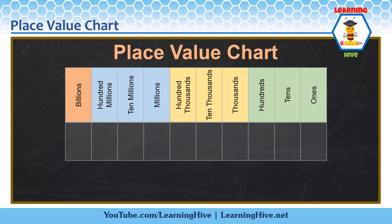Here's a place value chart for up to 1 billion. If we start from the ones place, the place value of a digit will increase by 10 times as we move left on the place value chart.